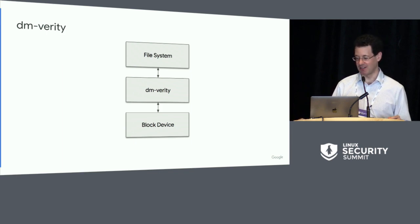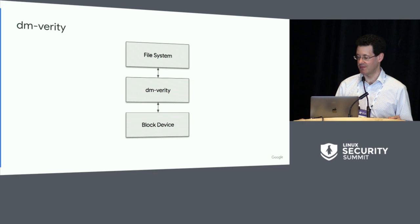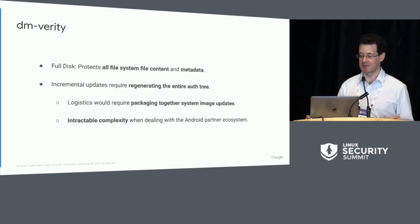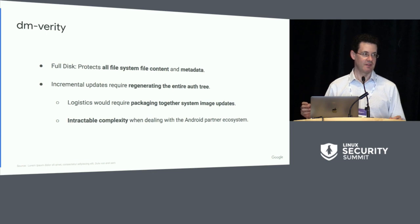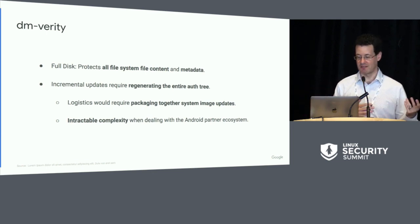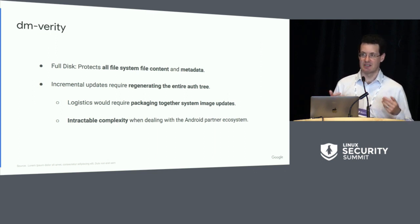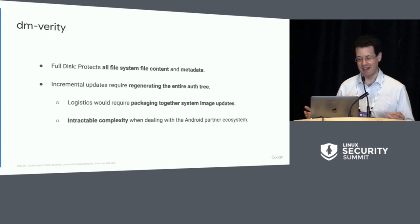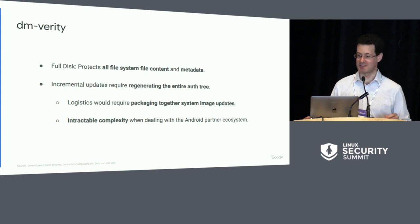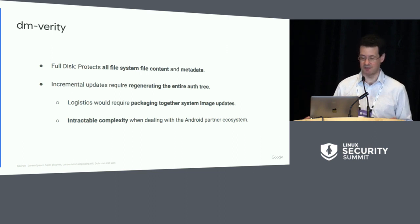DM Verity has been around for a little while. It sits in between the block device and the file system and protects all file system content plus the metadata. The user-generated content, the contents of individual files and inodes, are protected. In addition, everything associated with the file system — like the block mapping, directory entries, and so forth — is also protected. That's a very nice property to have, but not every environment is amenable to that level of protection.